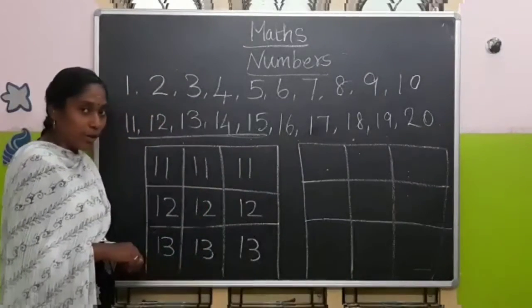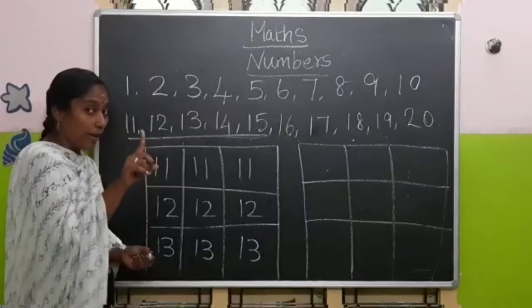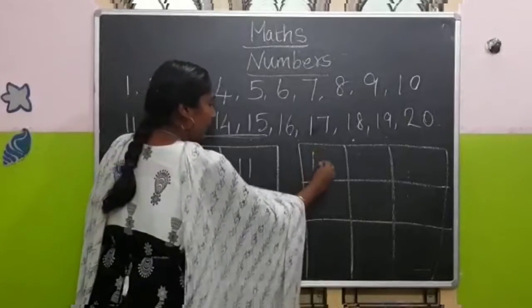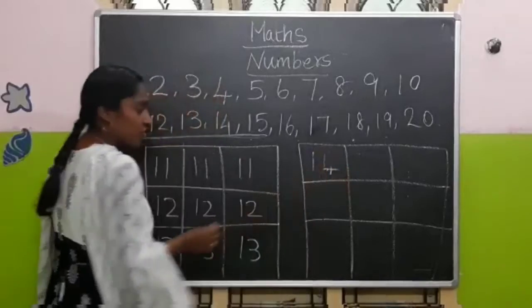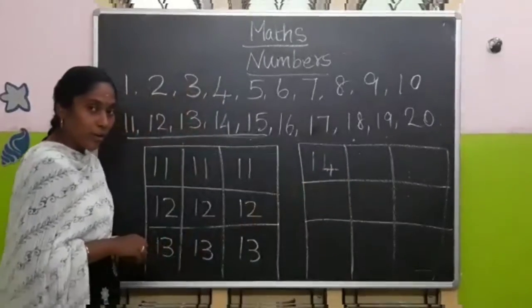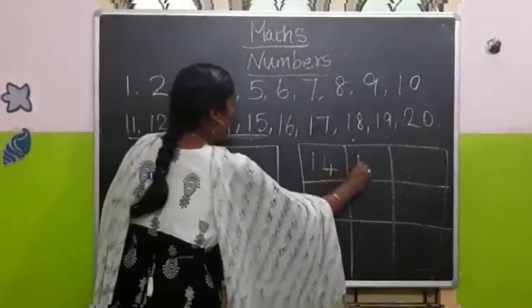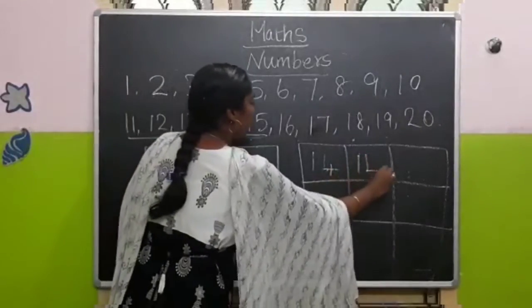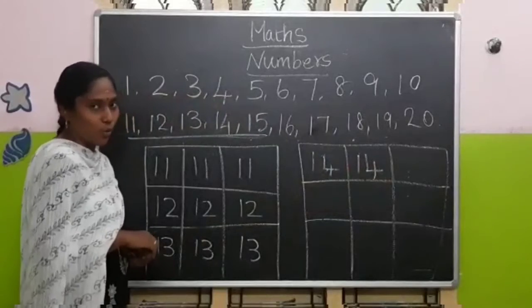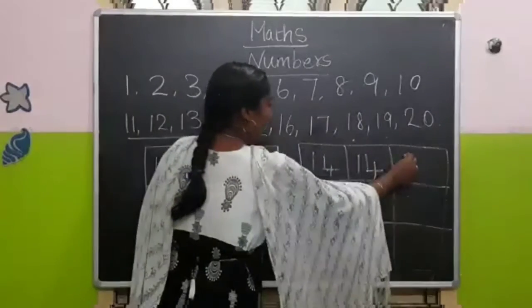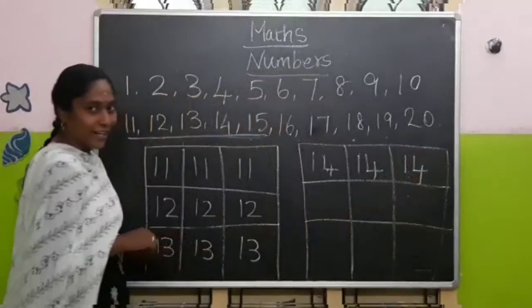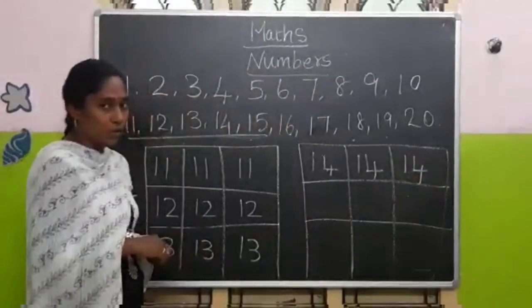To write number 14, you have to put 1 and 4. It makes number 14. One more time: 1, 4 — 14. Again: 1, 4, 14. Very good children.